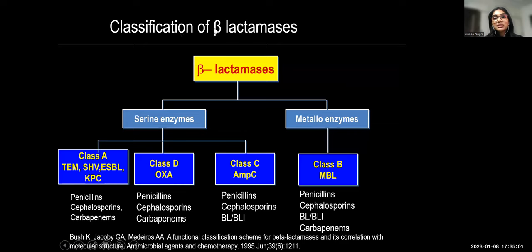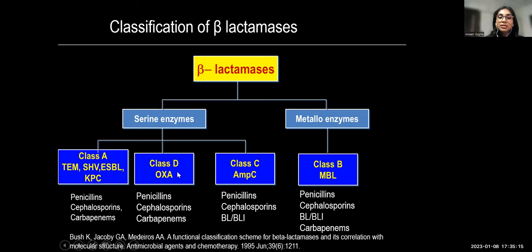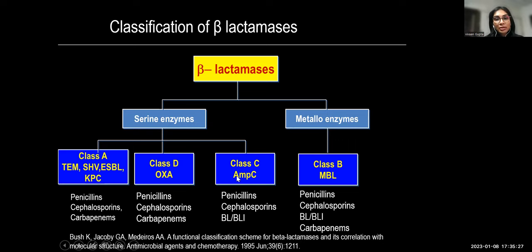Beta-lactamases are classified as serine enzymes or metalloenzymes. Serine enzymes include: Class A (TEM, SHV, ESBL, KPC); Class D (OXA, including OXA-48); Class C (AmpC). These hydrolyze penicillins, cephalosporins, and carbapenems. Metallobeta-lactamases belong to Class B and include NDM and others.